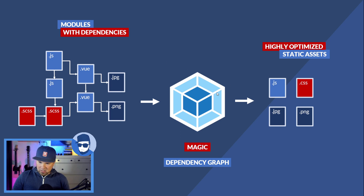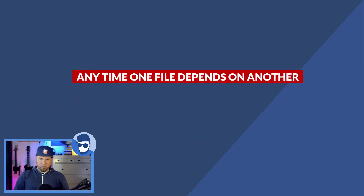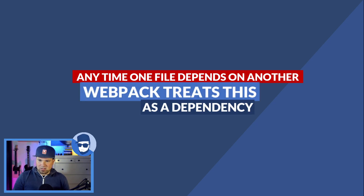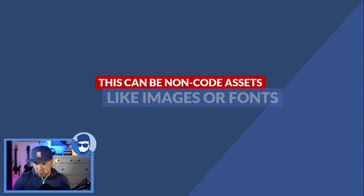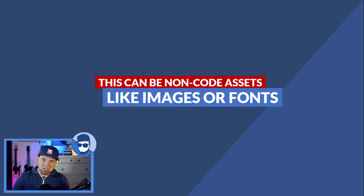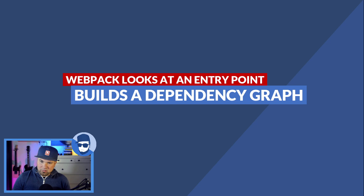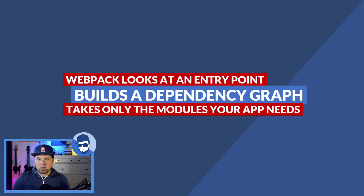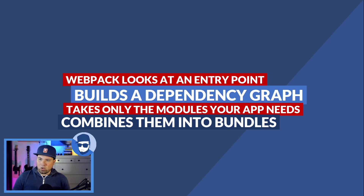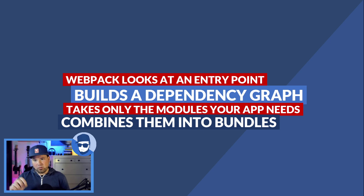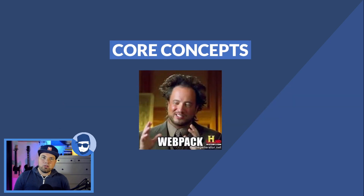Based on that graph, Webpack knows what to output and creates highly optimized static assets. You can configure what it does. First of all, any time one file depends on another, Webpack treats this as a dependency — and this can be non-code assets like images, fonts, SVG files, or CSS files. Webpack looks at an entry point, builds a dependency graph, and takes only the modules your app needs and combines them into bundles. If you load a big npm library but only use two functions out of 25, Webpack realizes that and only includes those two in the bundle. This is where Webpack truly shines.